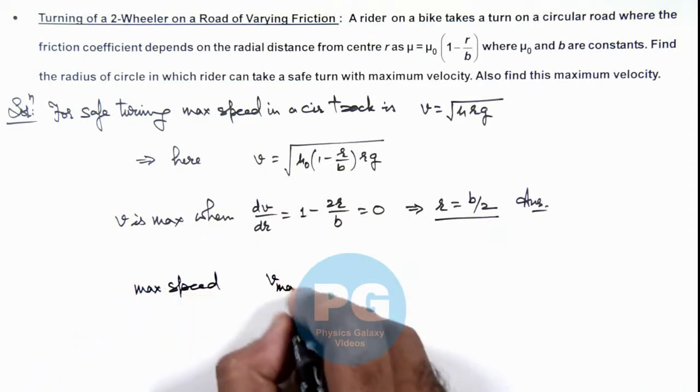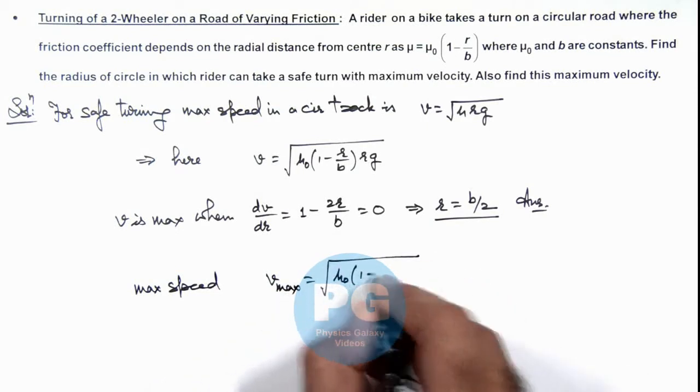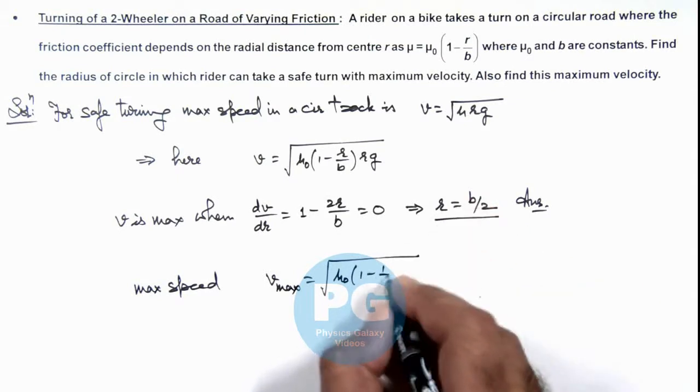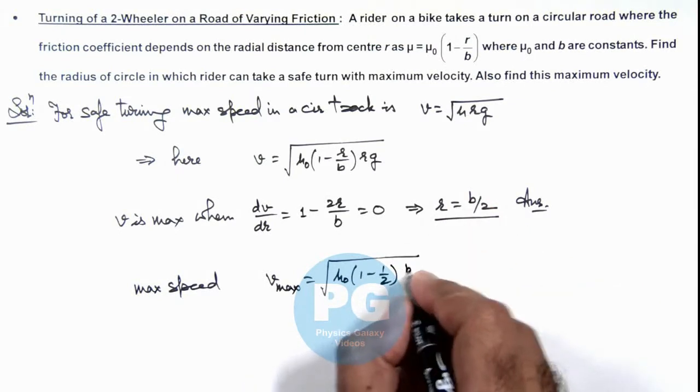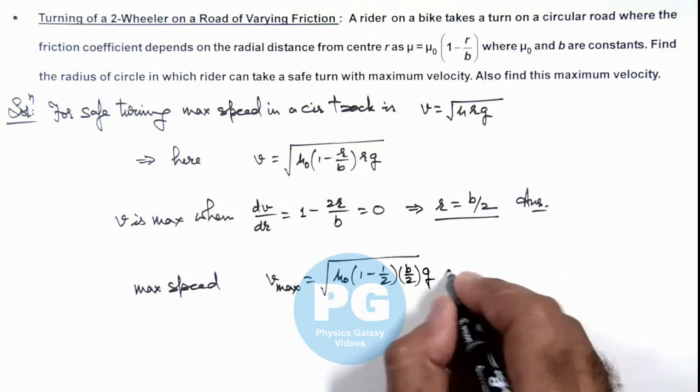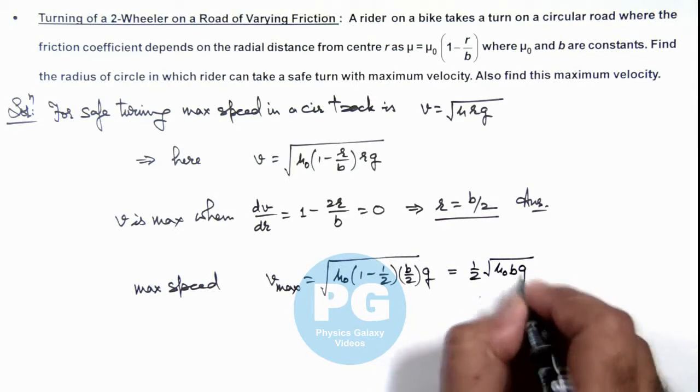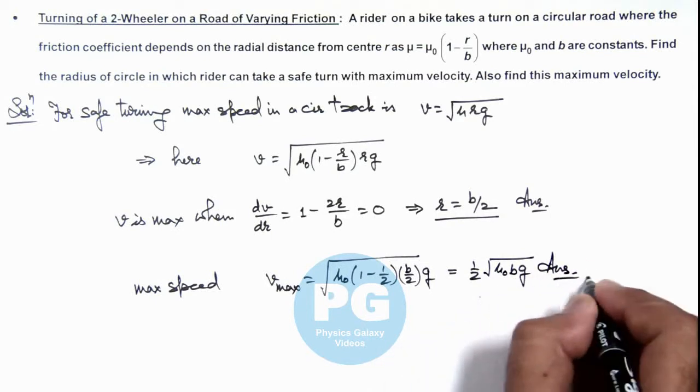which is given by √[μ₀(1 - 1/2) × (b/2) × g]. On simplifying, we get (1/2)√(μ₀bg), which is the other result of the problem for maximum speed.